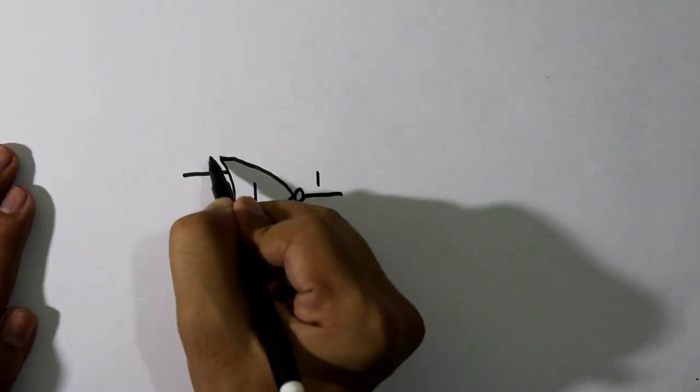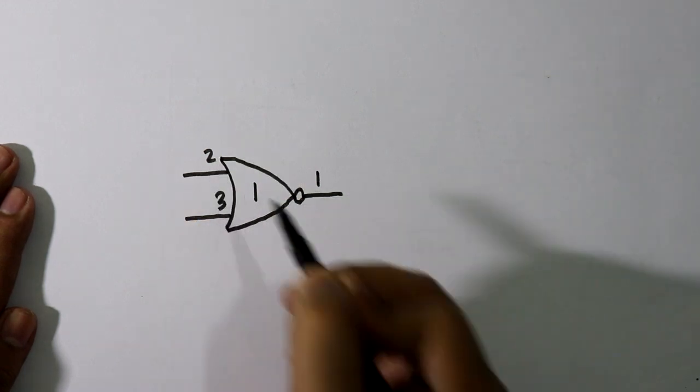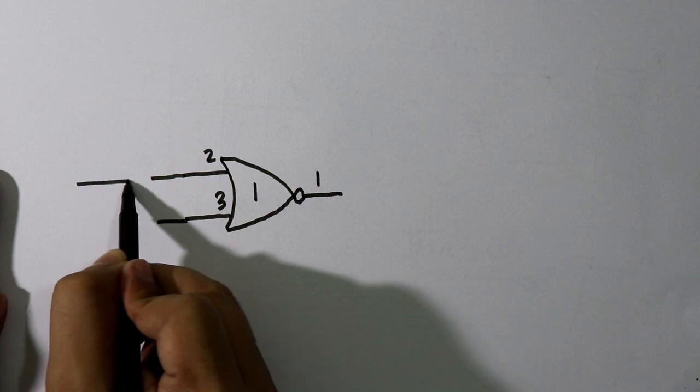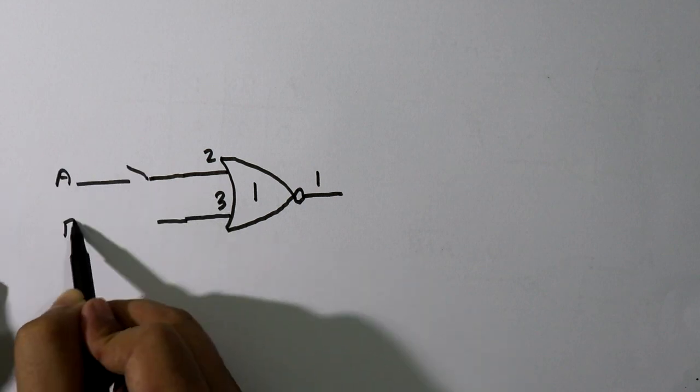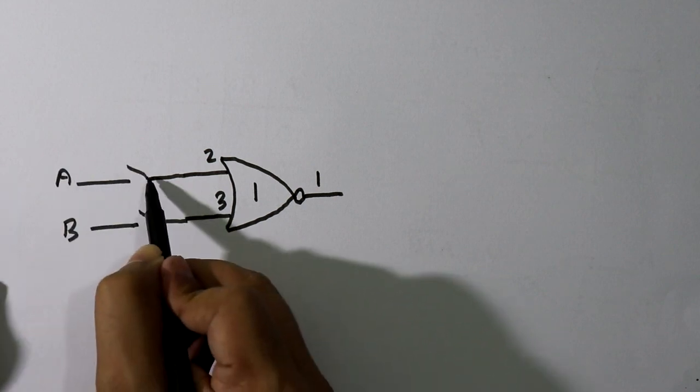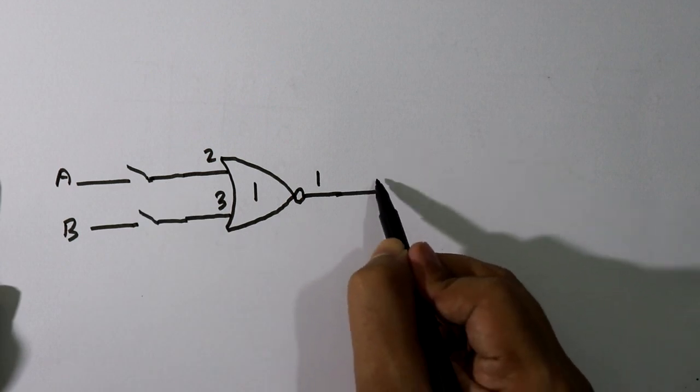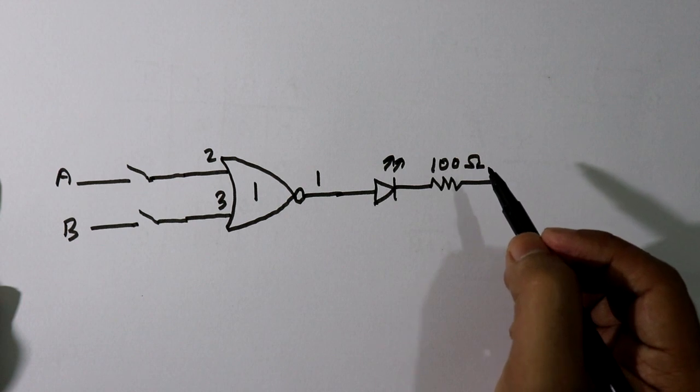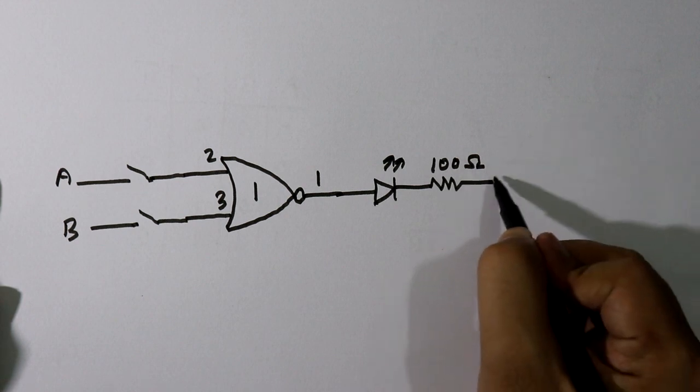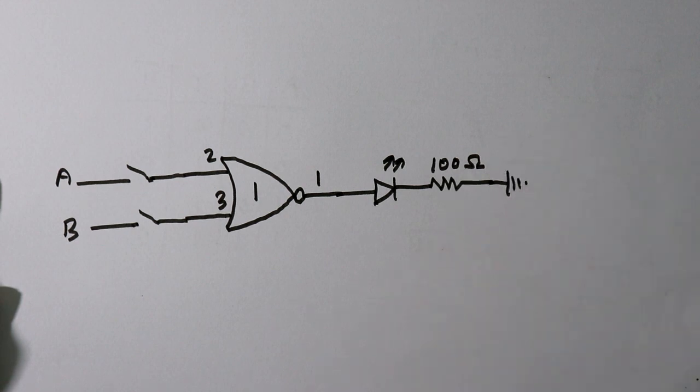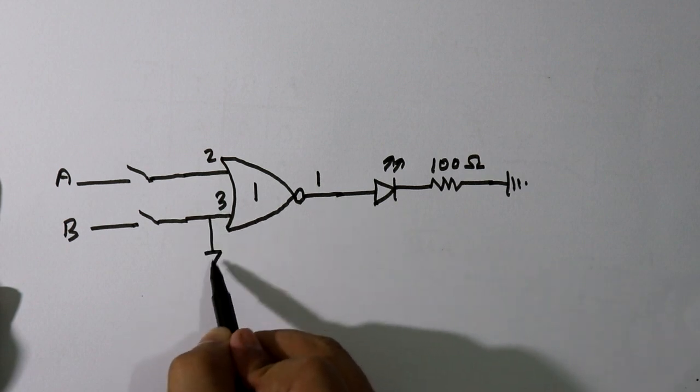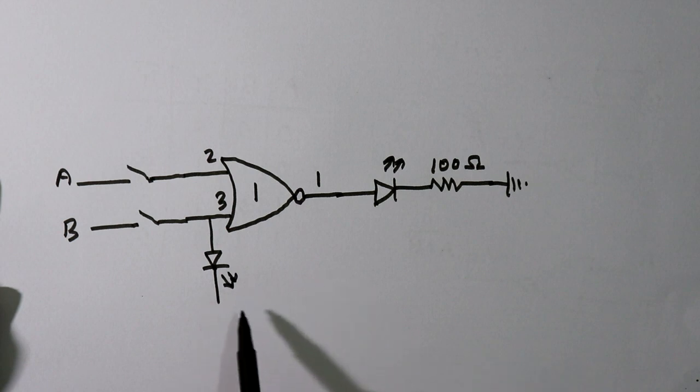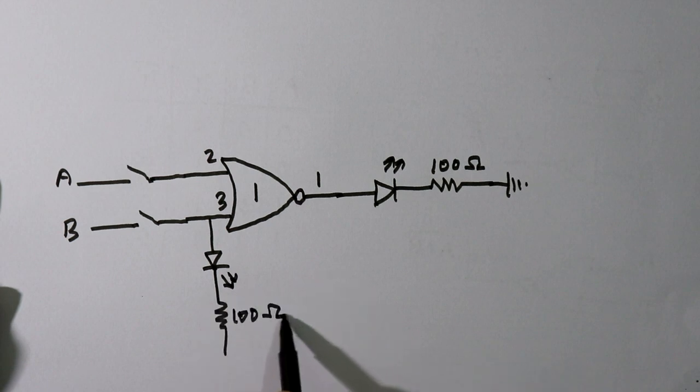On the breadboard we have to connect one input switch for input A, for B also we have to connect one input switch. We have to connect one output LED, then connect 100 ohm resistor in series with it connected to ground. We have to connect input LEDs also, so whenever the switches are closed these LEDs will glow. Here also 100 ohms connected to ground for input A also.